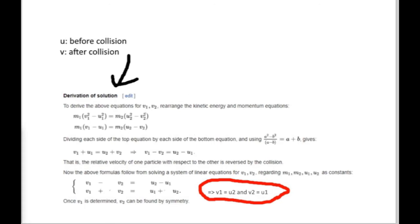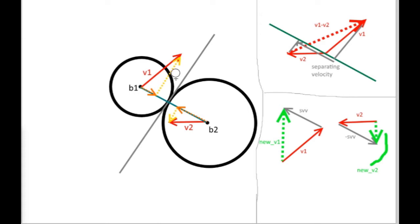That velocity-swap result can be used for the two-dimensional case as well. In two dimensions, instead of swapping the full velocity vectors, I only need to swap their component along the collision normal. At the moment of collision, I split both velocity vectors into two perpendicular components: one along the tangential line (yellow) and one along the collision normal (orange). The tangential component, parallel to the tangent at the point of collision, remains the same for both balls, while the normal components swap — just like in the one-dimensional case.